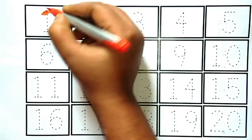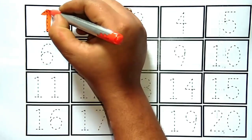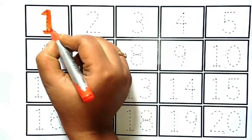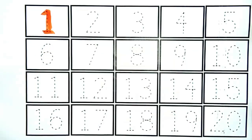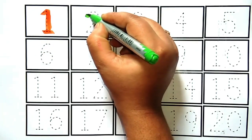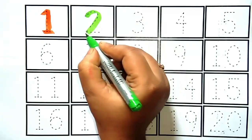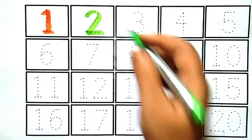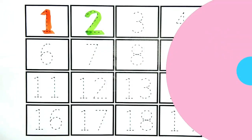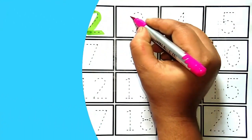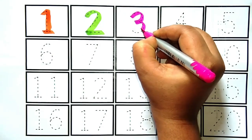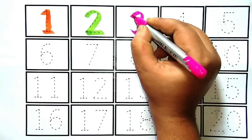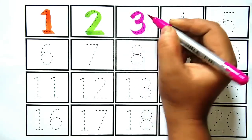Yeh hai number one. Kya hai kids? Yeh hai number one. Yeh hai number two. Kya hai kids? Yeh hai number two, yeh number three. Kya hai kids? Yeh hai number three.